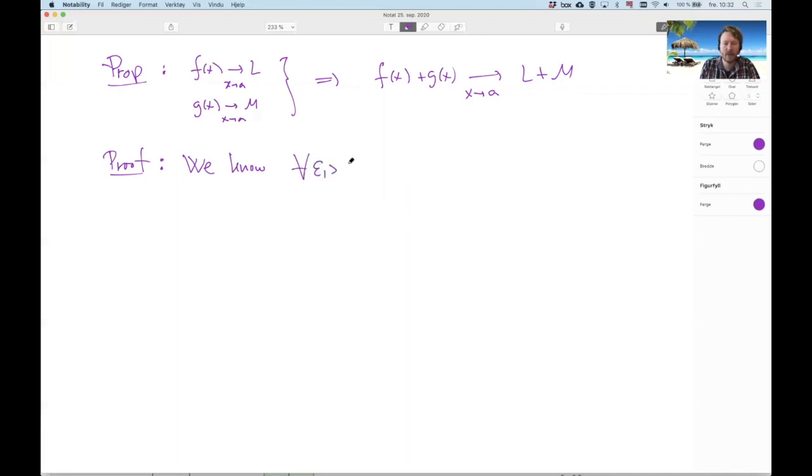So for every epsilon 1, there exists a delta 1 such that for every x in the domain, except for A, such that x minus A less than delta 1, x is not equal to A, these two things imply that f of x minus L is less than epsilon 1 and correspondingly here, it's just the same.